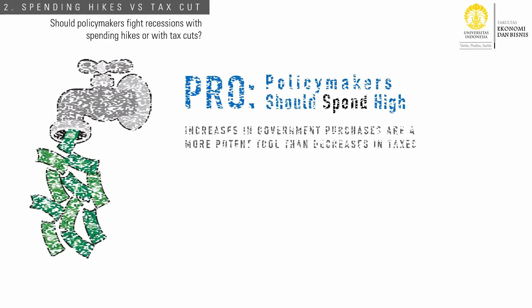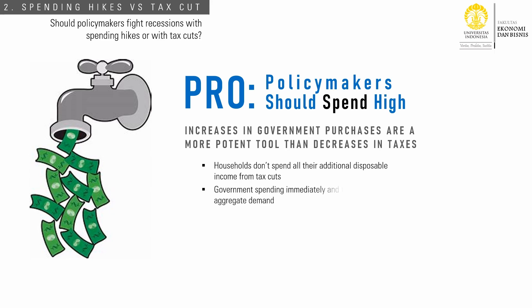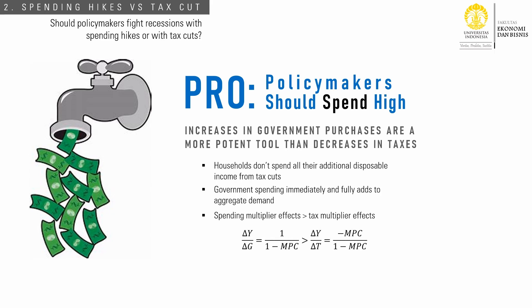Even when policymakers agree to implement stabilization policies, there is still debate about which policy tool is better and more effective. When tools of monetary policy lose their effectiveness — perhaps because of the zero interest rate policy or because the interest rate cannot be set any lower — fiscal policy is the option. The question is whether policymakers should stimulate with spending hikes or with tax cuts. According to the proponents of spending hikes, increases in government purchases are a more potent tool than decreases in taxes. When households get extra disposable income from a tax cut, they will likely save some of the additional income rather than spend it all, especially if they view the tax reduction as temporary. By contrast, when the government spends more, the spending immediately and fully adds to aggregate demand. With the same net amount, the government spending multiplier is thought to be higher than the tax multiplier.